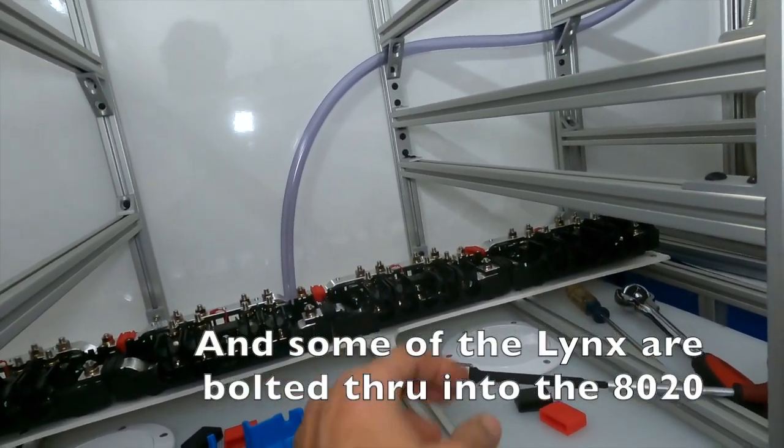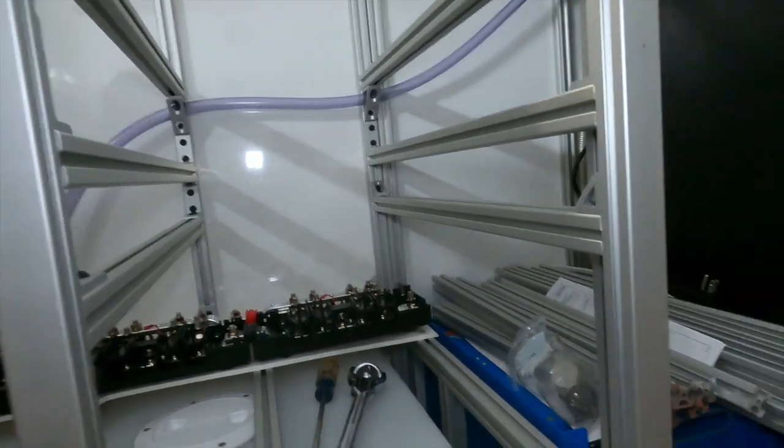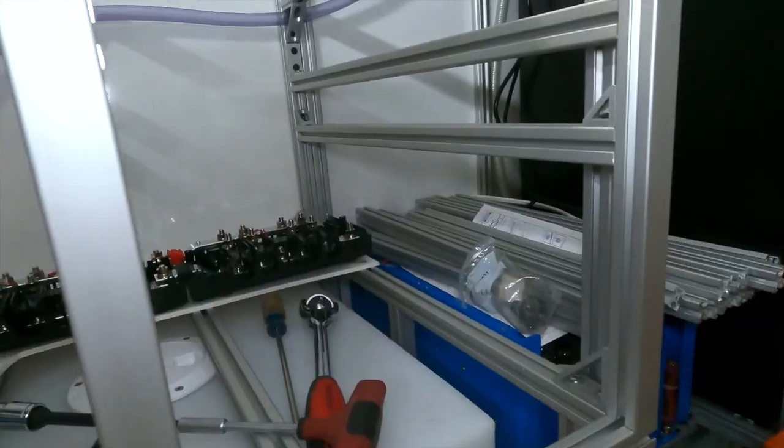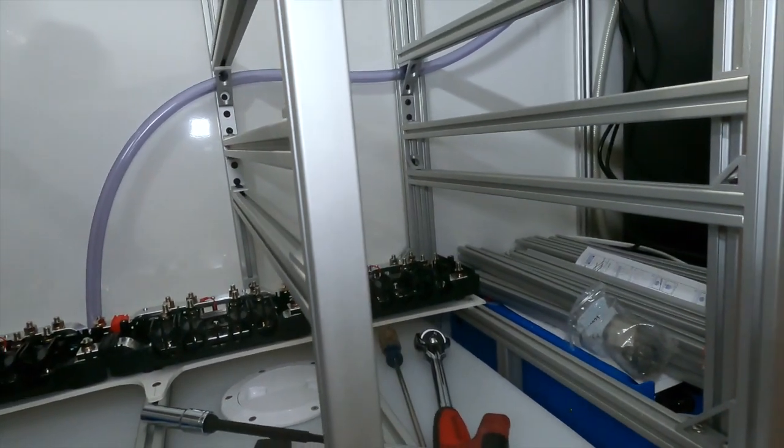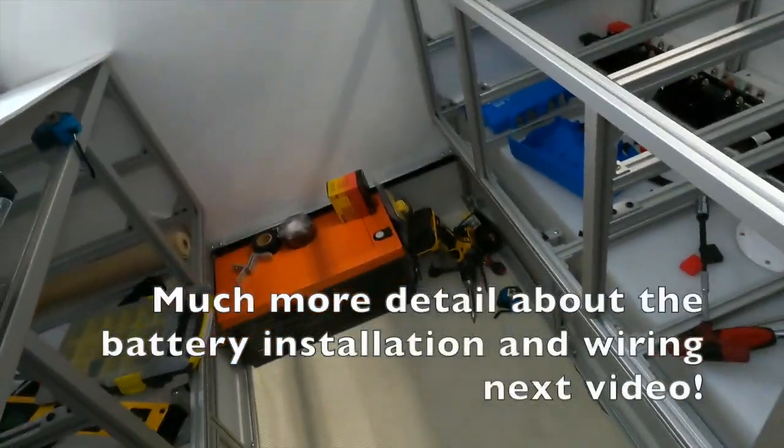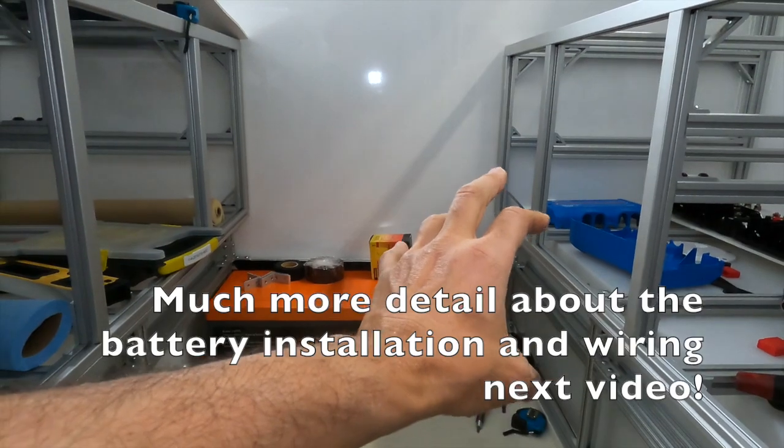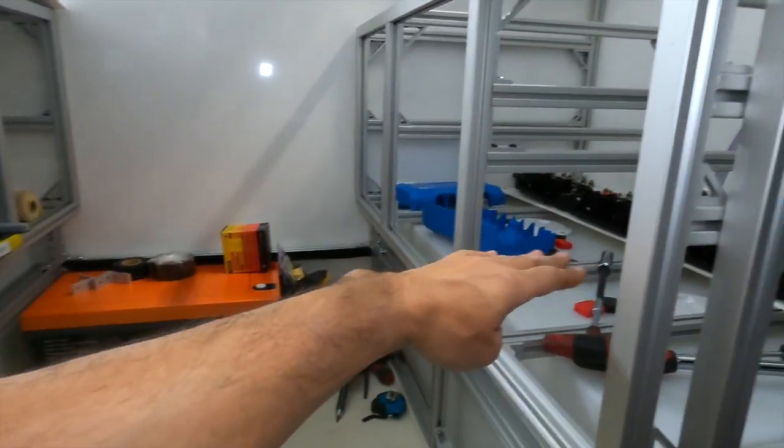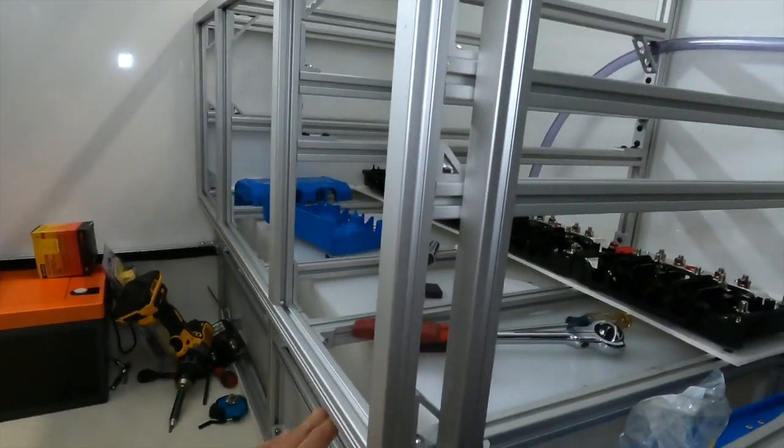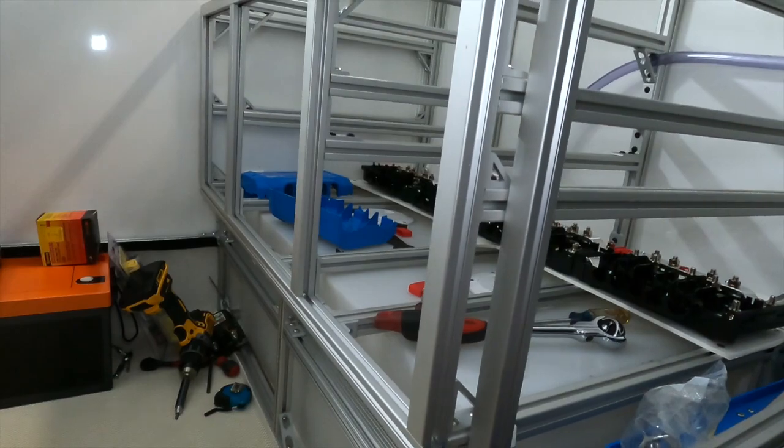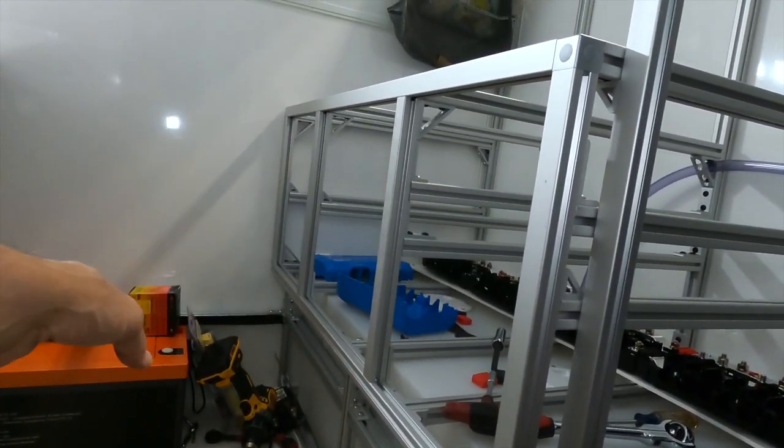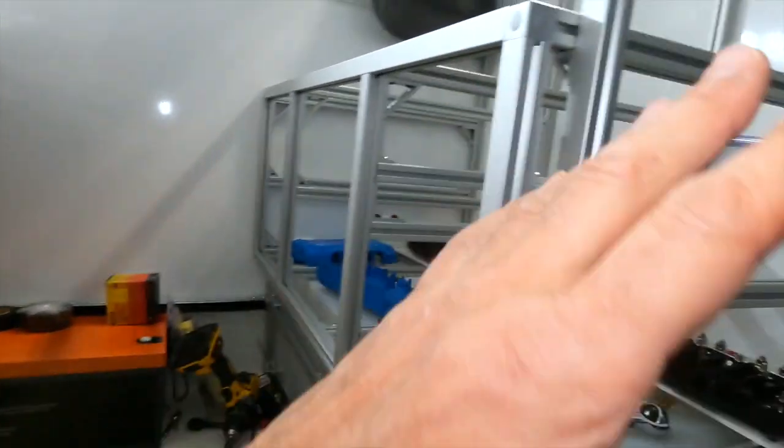My inverter's right here, the Lynx will go here where all the batteries are lined up. These are all drawers. The drawers will have a height about here, so above the Lynx and above the cabling, so that can all run from the batteries up through the cabinet and right directly into the Lynx.